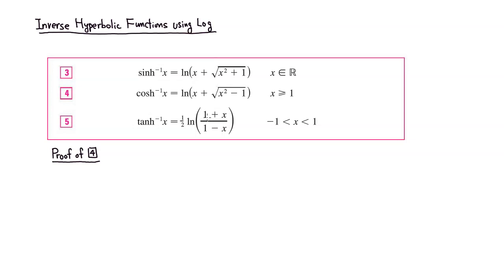Let's prove formula number four. We start with y equals inverse hyperbolic cosine of x, and we're trying to find y. We apply hyperbolic cosine to both sides, so we have hyperbolic cosine of y equal to x.